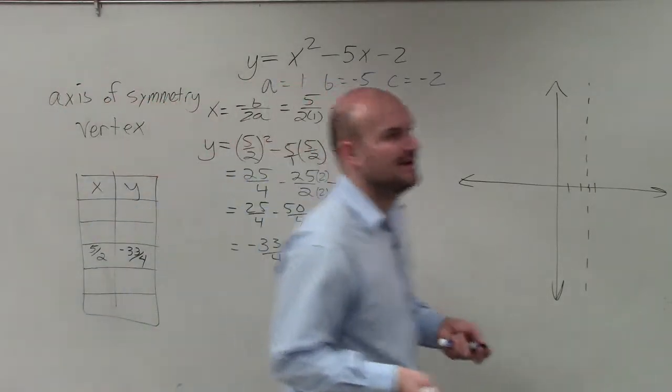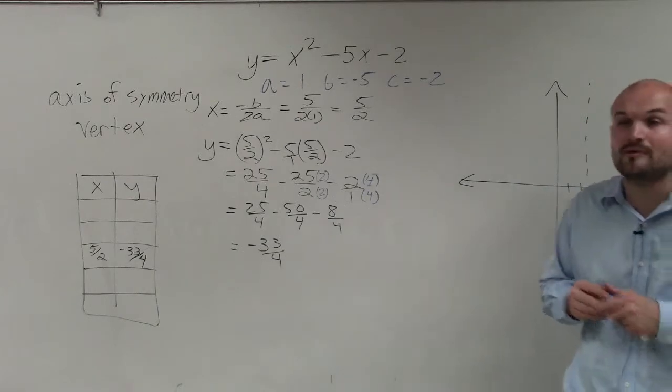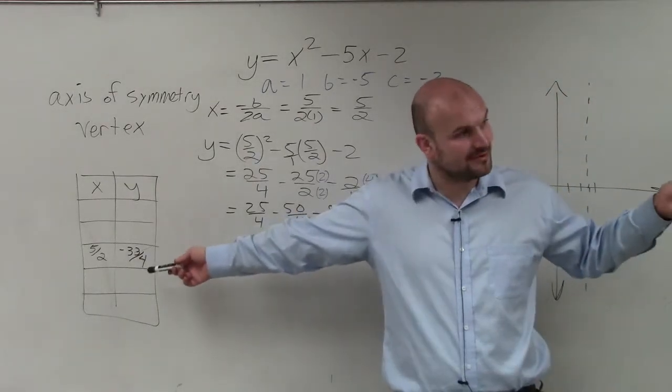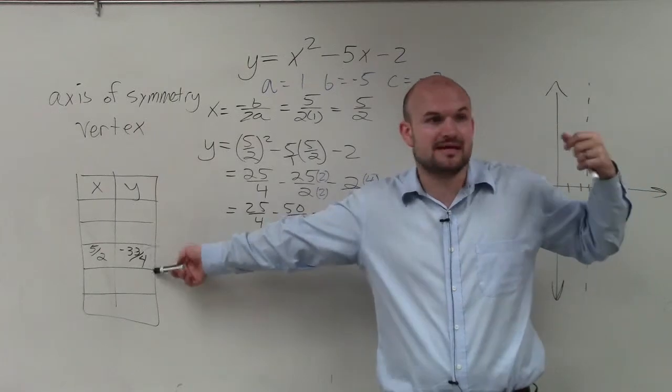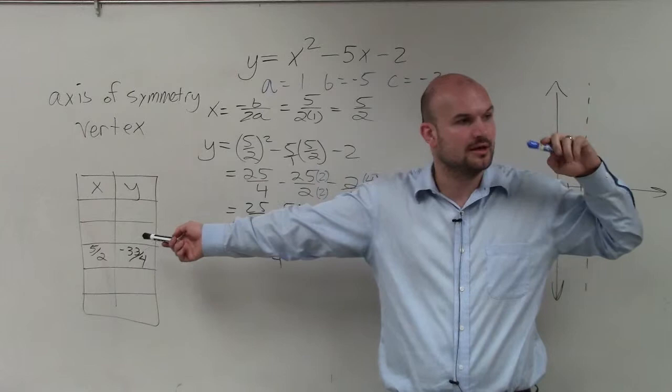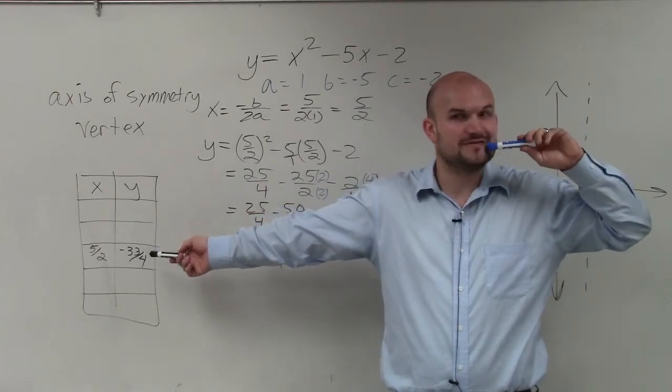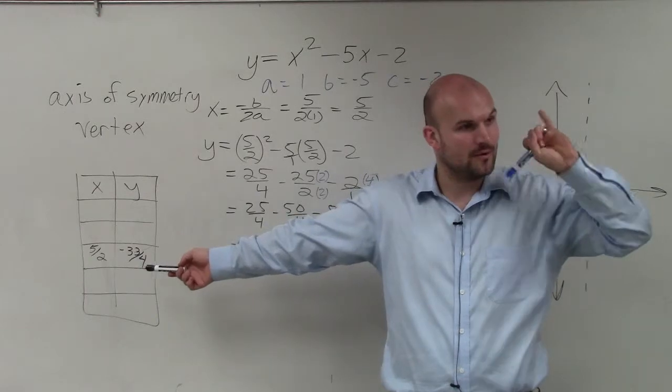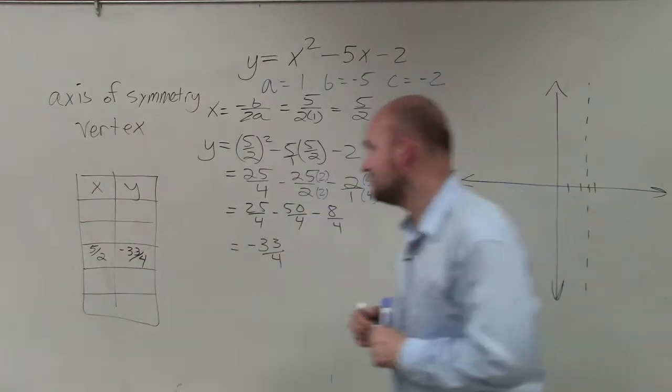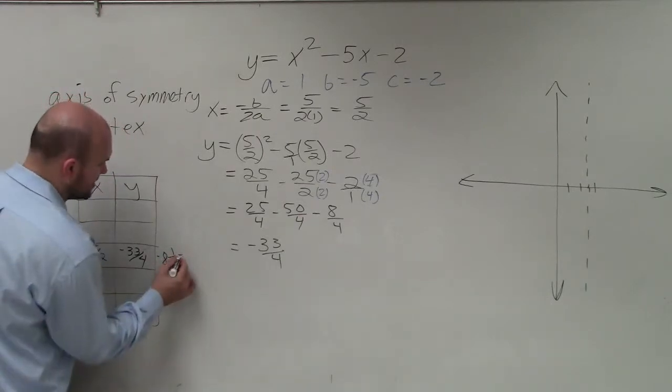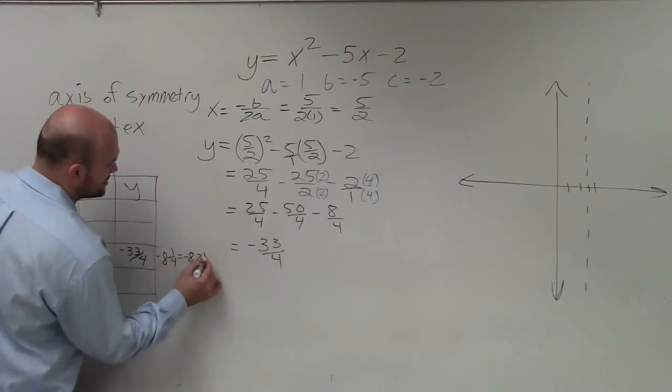Now, again, you might say, all right, well, how am I going to graph negative 33 fourths? Well, remember, ladies and gentlemen, we can rewrite this as a mixed number or, again, as a decimal. But if you're going to think about this as a mixed number, how many times is 4 going to negative 33? Negative 8 times with a remainder of 1. So, therefore, we could also rewrite this as negative 8 and 1 fourths, or that's also the same thing as a negative 8.25.